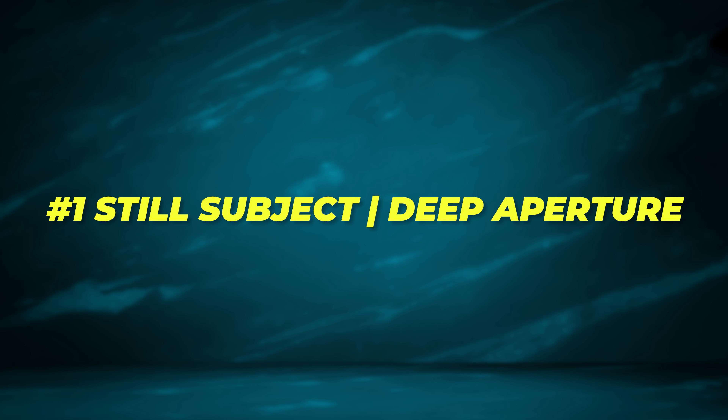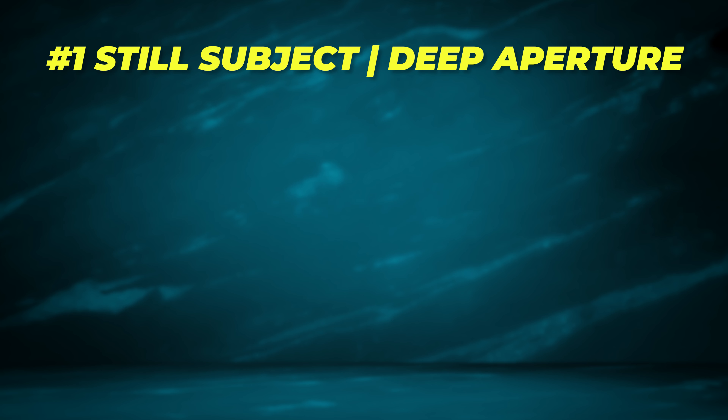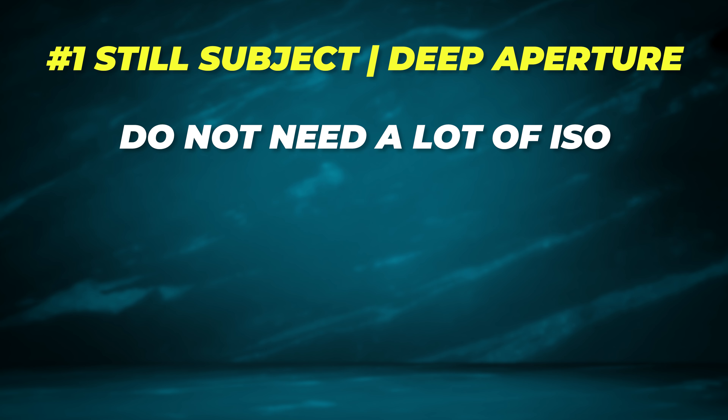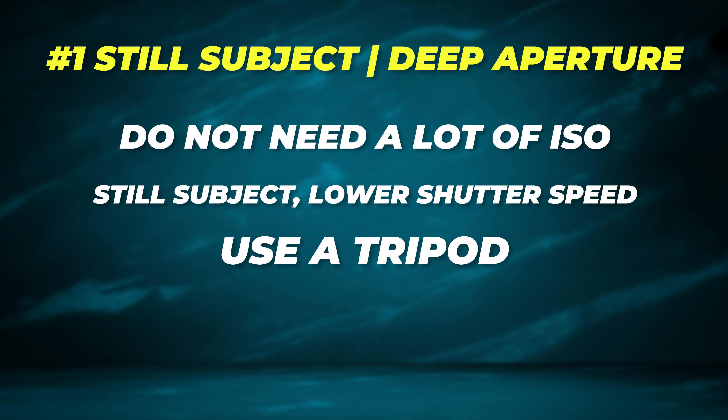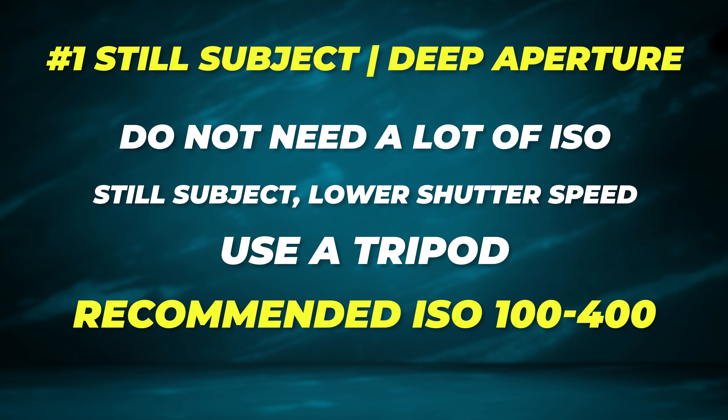Number one: shooting a still subject that needs a deep aperture. This requires the least amount of ISO. Because your subject is still, you can really lower the shutter speed to compensate for your higher aperture. Using a tripod and a slower shutter speed will allow you to let in as much light as you need. For this type of photo, I recommend using 100 to 400 ISO.